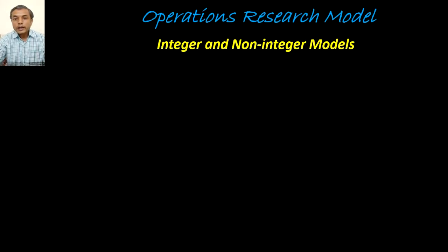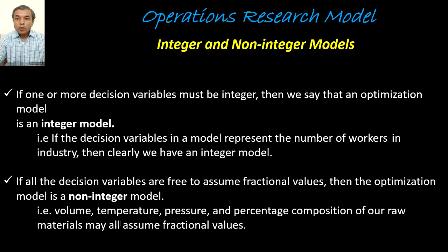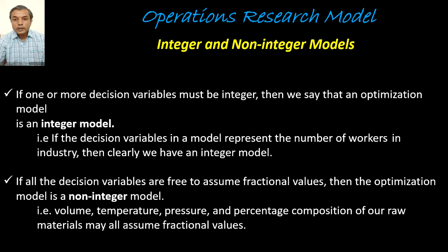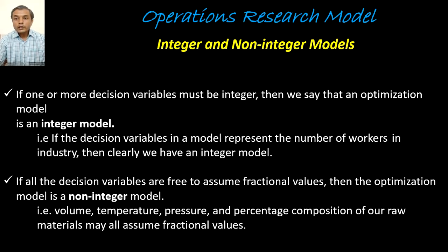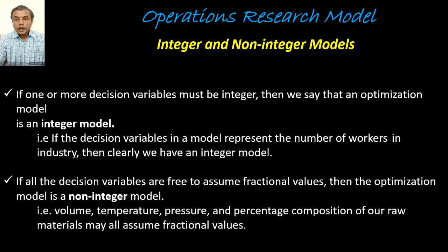Next are integer and non-integer models. If one or more decision variables must be integers, the model is an integer model. For example, the number of workers in an industry must be an integer — we cannot have 1.5 or 20.2 workers; it is either 20 or 21. A non-integer model allows decision variables to assume fractional values, such as volume, temperature, pressure, or percentage composition of raw materials. In Operations Research, we discuss both integer and non-integer models.